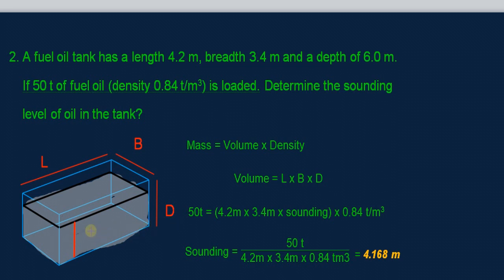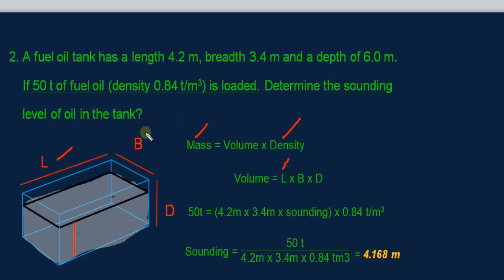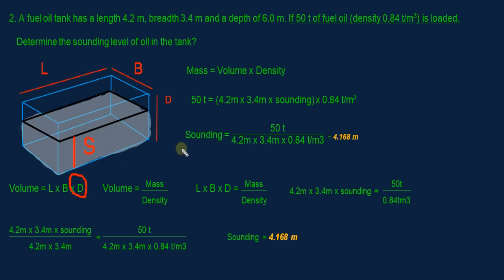To calculate the sounding of oil inside the tank, we use the formula mass equals volume times density. Mass is given as 50 tons and density is 0.84 tons per cubic meter. For volume, we can use the tank's length and breadth as the length and breadth of the fuel oil, but we cannot use the depth of 6.0 meters since that is the full tank depth. The depth of the fuel oil — which equals the sounding — is what we need to find. So we rearrange to: volume equals mass over density.